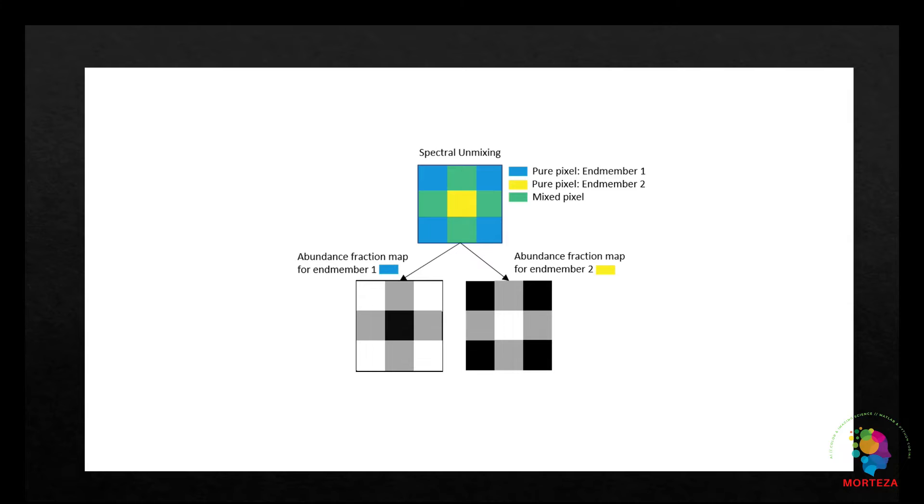Spectral matching identifies the class of an end member material by comparing its spectra with one or more reference spectra. The reference data consists of pure spectral signatures of materials which are available at the spectral libraries. The spectral libraries could be found online or just through someone who knows the pure spectral reflectance available in the data.